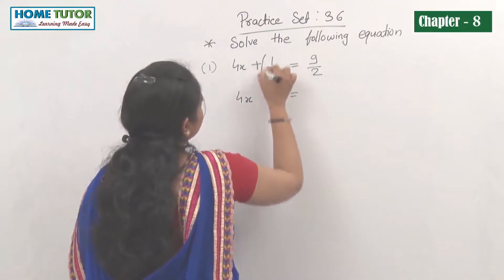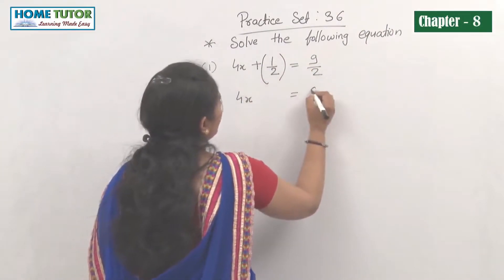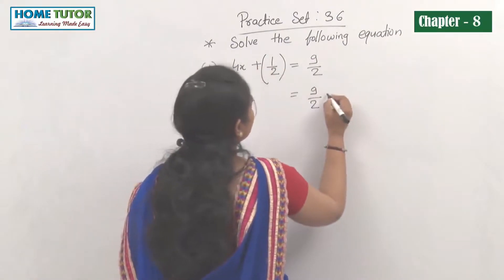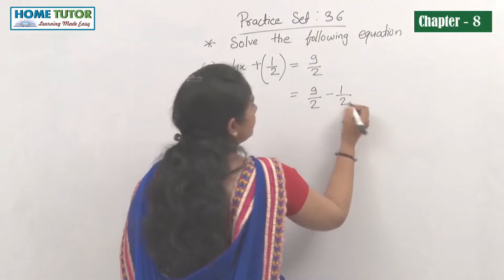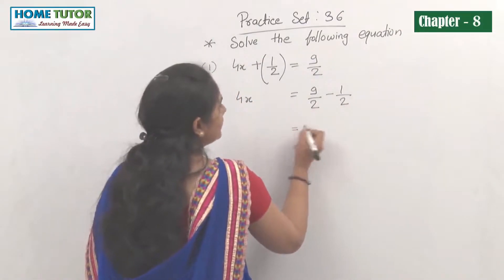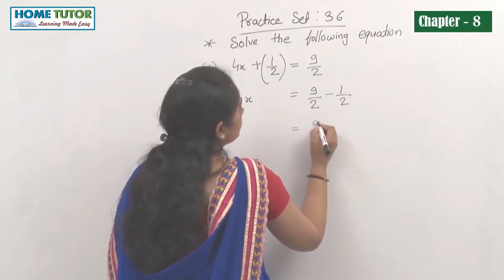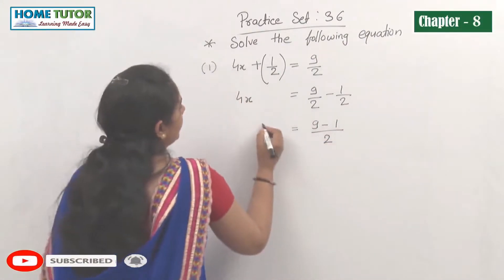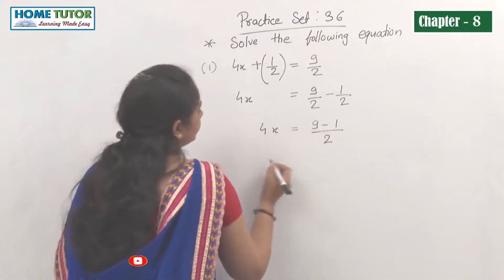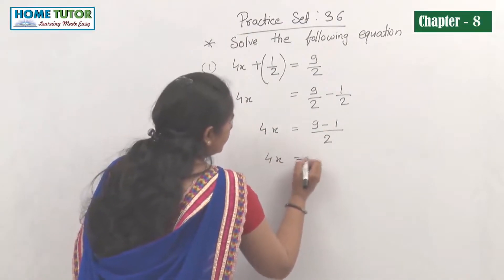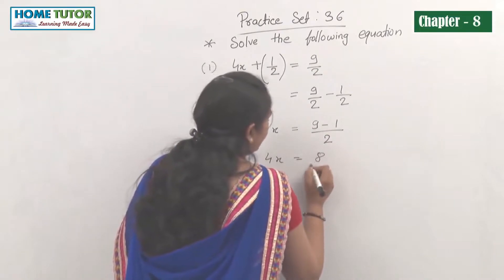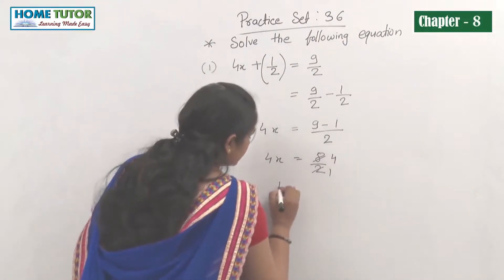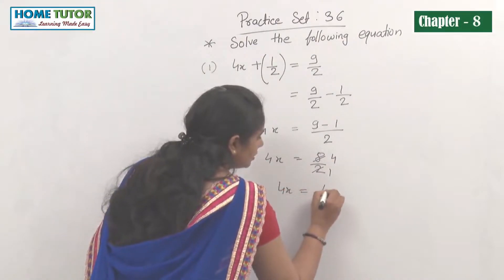We take the 1/2 to the right-hand side, so plus 1/2 becomes minus 1/2. Since the denominators are the same, we write numerator 9 minus 1 over denominator 2. So 4x equals 8/2, which simplifies to 4x equals 4.